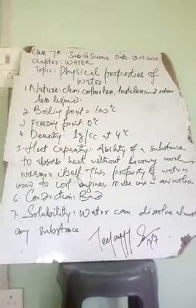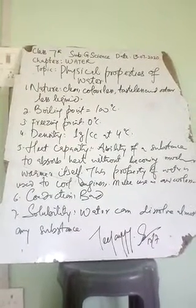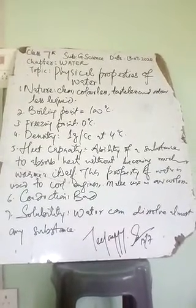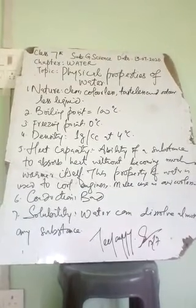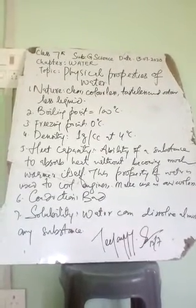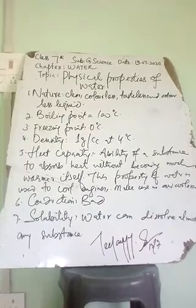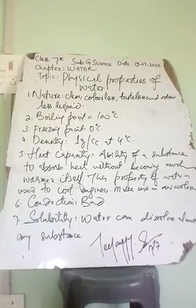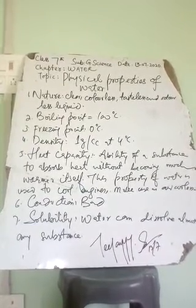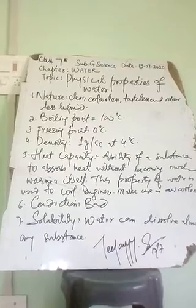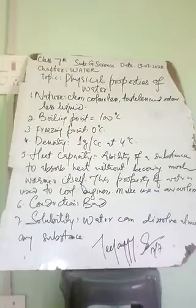Water is composed of two atoms of hydrogen and one atom of oxygen (H₂O). Although boiling converts water into steam and cooling it produces ice, the chemical composition remains the same in all three states — solid, liquid, and gas. These constituent elements can be separated by passing electric current through water in a process called electrolysis.